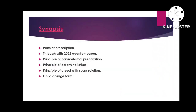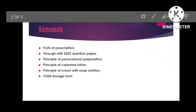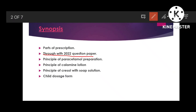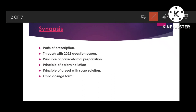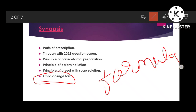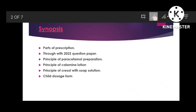For synopsis, very important: prepare the parts of prescription — pathology and prescription — these two chapters you have to be thorough with. Also go through the 2022 question paper, which is very important and mandatory, as questions may be asked from it. Key topics include: principle of paracetamol preparation, calamine lotion, crisol with soap solution, ammonium acetate, and child dosage form — Clark's formula. Four formulas are there; practice those formulas clearly.